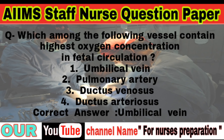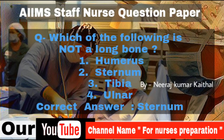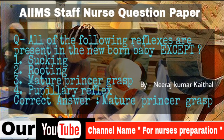Question: Which lobe is most commonly affected in children with pulmonary atelectasis? Options: Right upper lobe, right lower lobe, left upper lobe, left lower lobe. Correct answer is right upper lobe. Atelectasis is the collapse or closure of a lung resulting in reduced or absent gas exchange. Question: Which of the following is NOT a long bone? Options: Humerus, sternum, tibia, ulna. The right answer is sternum.